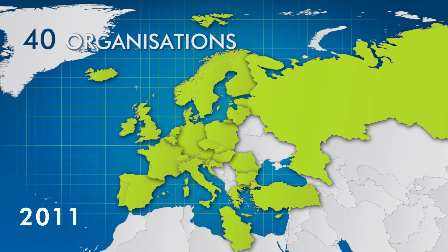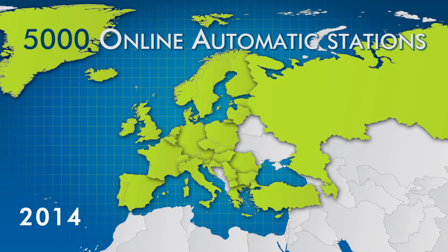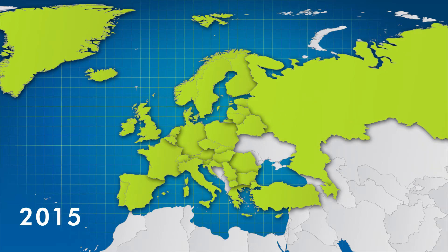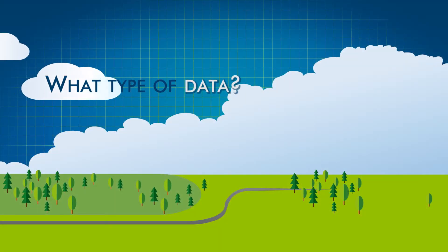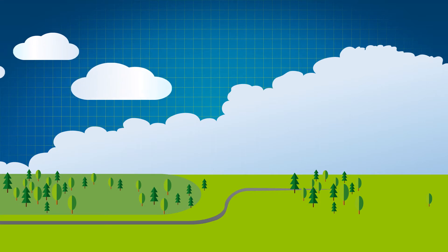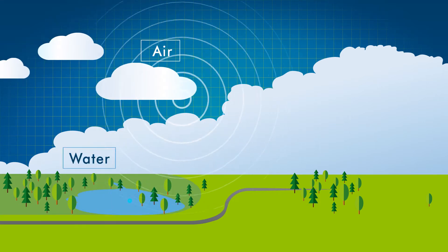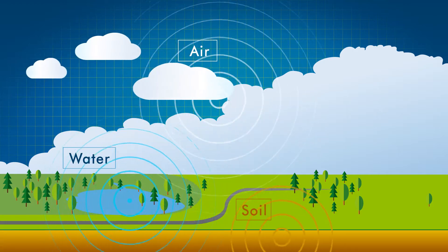It makes radiation data from 40 organizations in 38 European countries available, using over 5,000 online automatic stations during an emergency, as well as under normal conditions. Under the Euratom Treaty, EU countries are obliged to continuously monitor radioactivity in the air, water and soil and report it to the European Commission.